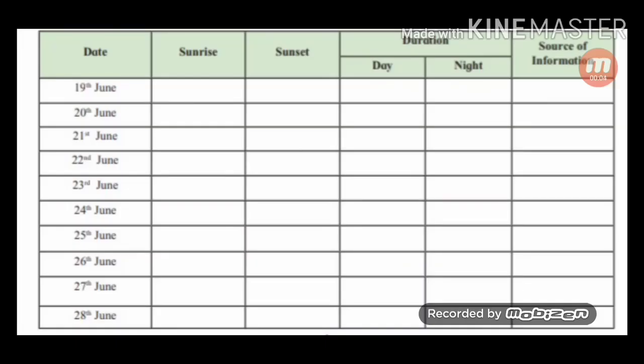Students, here is an activity for you. For this activity, you have to note down the timings of sunset and sunrise in your area. You can use any source of information like a calendar, newspaper, or internet. Here is a format on how to record your observation. Record the entries for the month of June.